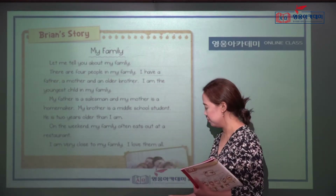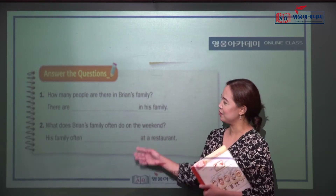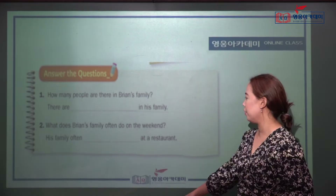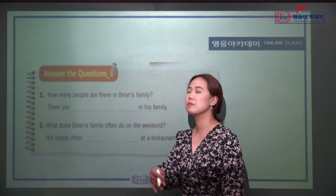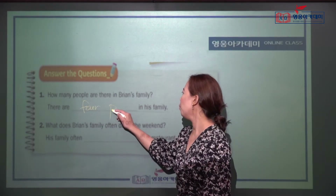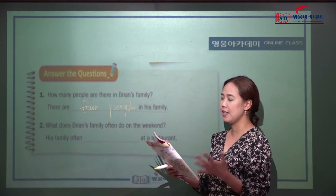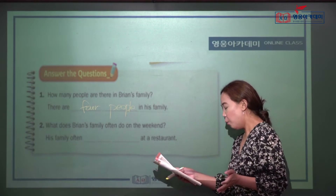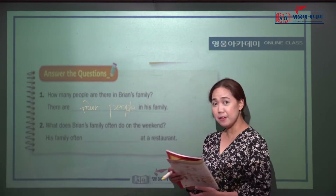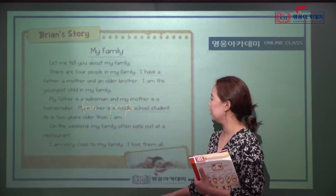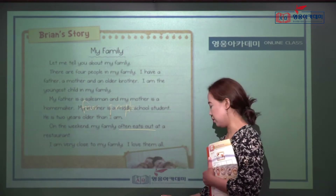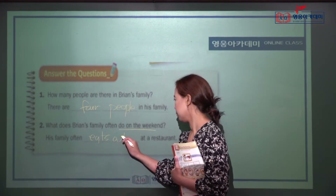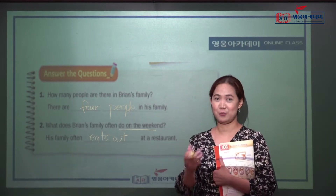Let's answer the comprehension questions. Number one: how many people are there in Brian's family? There are four people in his family — he has a father, a mother, and an older brother, so that's four. Number two: what does Brian's family often do on the weekend? His family often eats out at a restaurant.